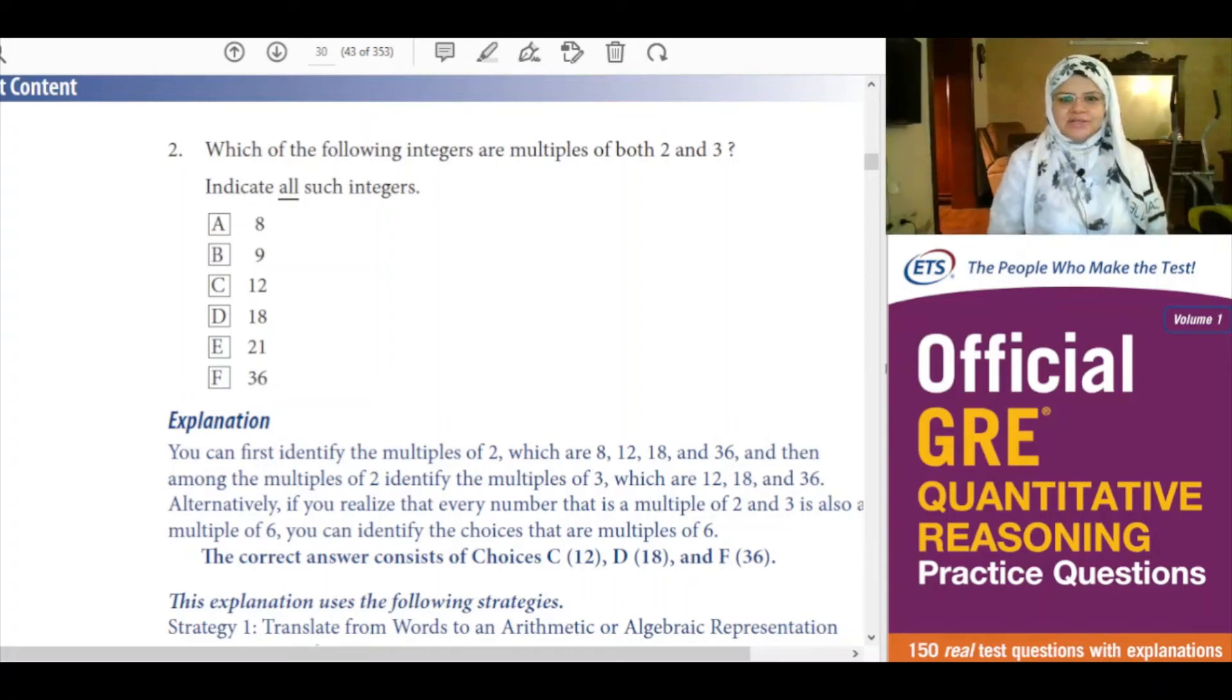Which of the following integers are multiples of both 2 and 3? Indicate all such integers. A: 8, B: 9, C: 12, D: 18, E: 21, and F: 36.